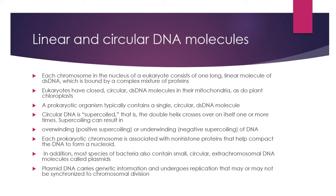Supercoiling means that the DNA is twisted, like a telephone wire. Supercoiling is of two types: positive supercoiling, when DNA is overwound, and negative supercoiling, when it is underwound. There are also non-histone proteins present in prokaryotic DNA. In addition, bacterial species have an extra chromosomal small circular DNA called a plasmid. Plasmids mainly carry bacterial genetic information, replicate independently, and transfer from one generation to the next.